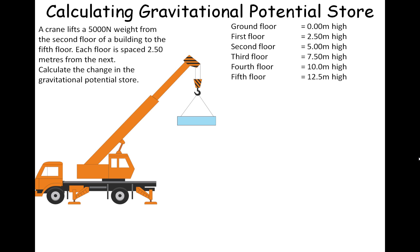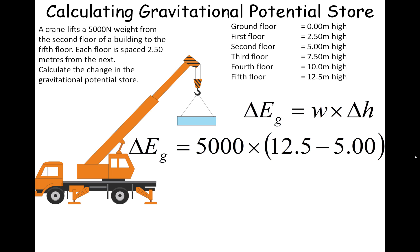We can then use this information to calculate delta H. So we have that delta H is going to be the fifth floor, which is 12.5, minus the second floor, which is at 5 meters high.